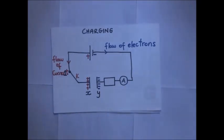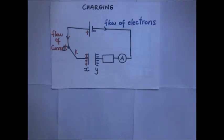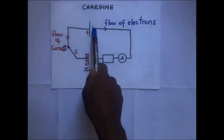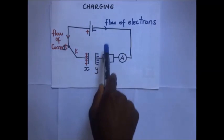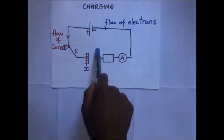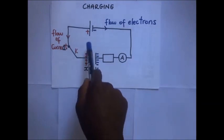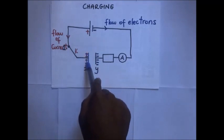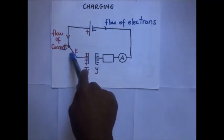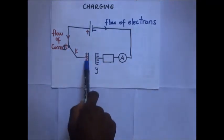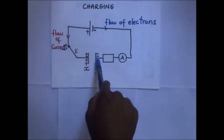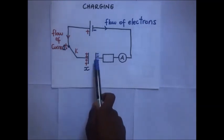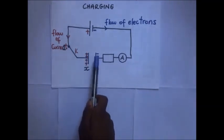During the charging process, electrons flow from the negative terminal of the battery to plate Y. Because the negative terminal repels electrons, they concentrate on plate Y, making it negatively charged. Since the positive terminal attracts electrons from plate X, an excess of positive charges remains on plate X, making it positively charged. As these charges accumulate on the plates, the potential difference across the plates starts increasing.